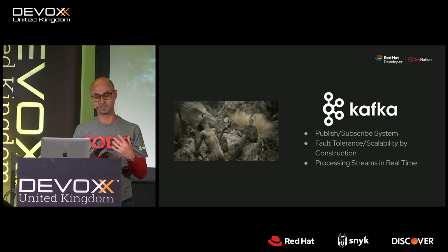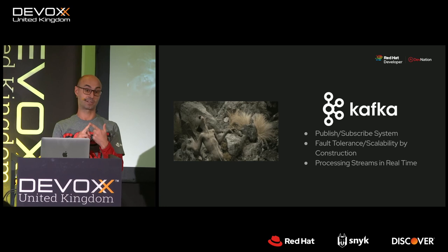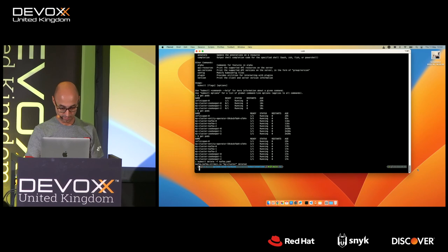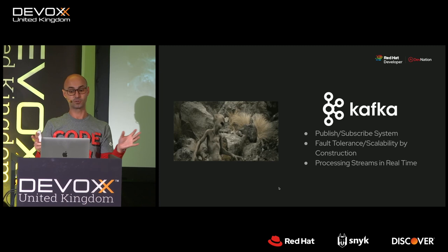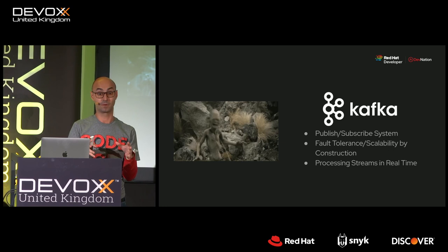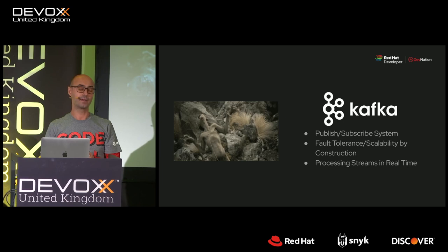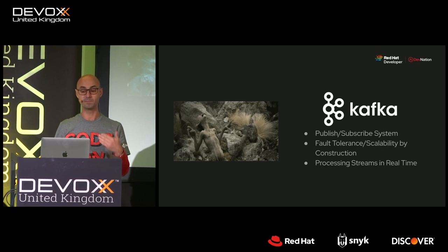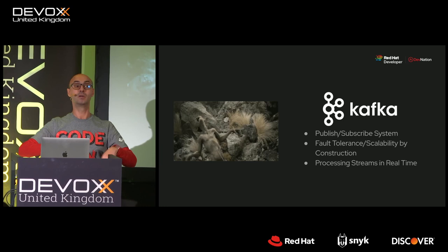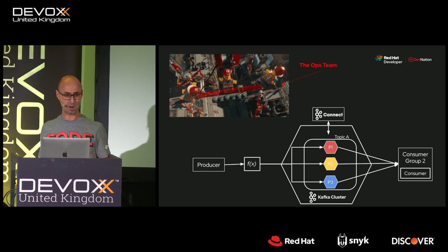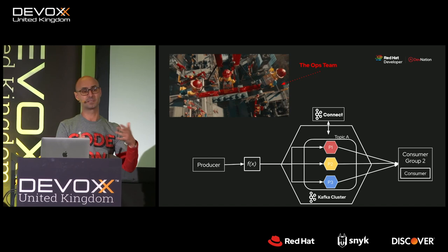Apache Kafka has fault tolerance and scalability by construction — the way it's been built lets you have fault-tolerant applications and you can scale the cluster easily. One of the key points of Apache Kafka is that you can process events in real time, so no more batch processes. You can create reports on real data in real time. The ops team said 'Apache Kafka, super nice!' and started figuring out how everything works.